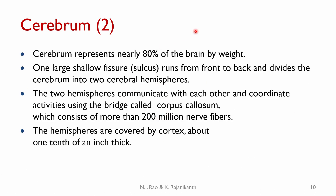The cerebrum represents nearly 80 percent of the brain by weight. One shallow fissure runs from front to back and divides the cerebrum into two cerebral hemispheres. The two hemispheres are not identical in their functions, but there are several activities which are similar. The two hemispheres communicate and coordinate activities using a bridge called the corpus callosum, which consists of more than 200 million nerve fibers, so that the two hemispheres can act together.